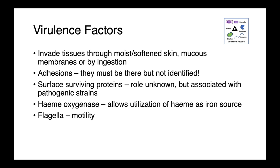Leptospira also produce what are called surface surviving proteins, whose role isn't fully known but are associated with pathogenic strains, suggesting a relationship with how disease is caused. They produce heme oxygenase, which allows them to use heme as an iron source — that protein within our red blood cells and erythrocytes. Finally, they're motile and produce flagella.